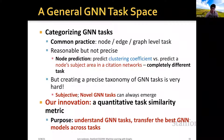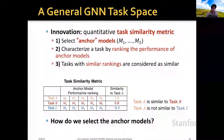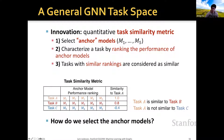Our innovation is to propose a quantitative task similarity metric. Our purpose is to understand GNN tasks, and as a result, we can transfer the best GNN models across different tasks. Concretely, we propose this quantitative task similarity metric. To do this, we will first select a notion called anchor models. Suppose we want to measure the similarity between task A, B, and C, and the anchor models are M1 to M5.